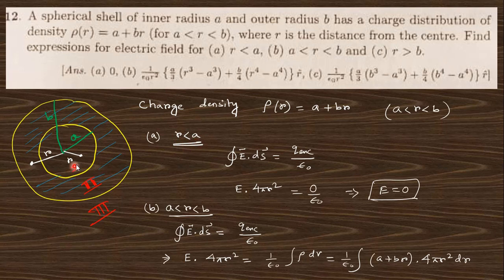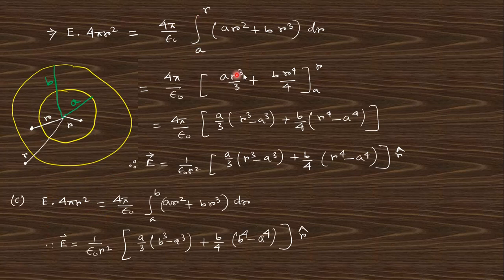For r less than a, applying Gauss's theorem with a spherical surface gives 4πr², but the charge enclosed in that inner region is zero, so the electric field is also zero. For the region a to r (region 2), the Gaussian surface gives 4πr² and the enclosed charge is ∫ρ dV with limits from a to r.